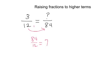That means I multiplied by 7 to get 84. If I multiplied the bottom by 7 to keep this equivalent, I have to multiply the top by 7 as well, which means the top would be 21.